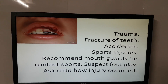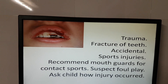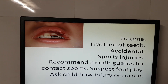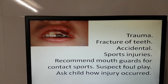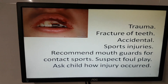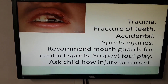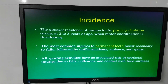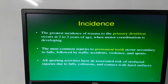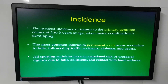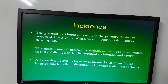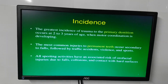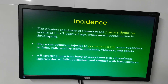This broken tooth shows trauma — fracture of teeth. It can be accidental or a sports injury. Mouth guards are recommended for contact sports. Always suspect foul play and ask the child how the injury occurred. The greatest incidence of trauma to the primary dentition occurs at two to three years of age when motor coordination develops. Most common injuries to permanent teeth are secondary to falls, followed by traffic accidents, violence, and sports.